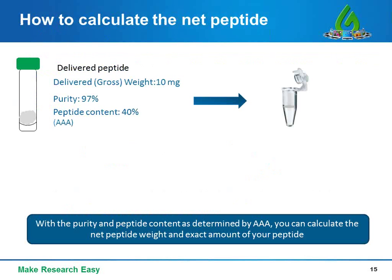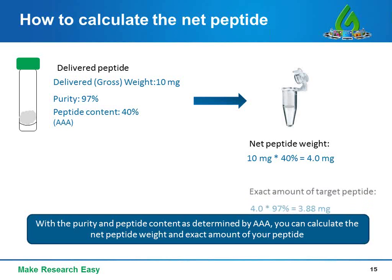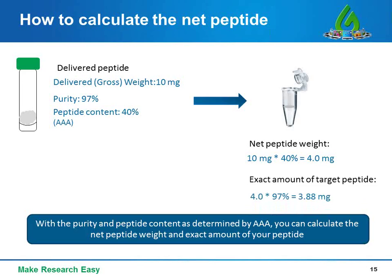Here is an example showing how to calculate the precise amount of your target peptides. A custom peptide with a delivered gross weight of 10 mg, 97% purity, and 40% peptide content as determined by AAA. First, you get the net peptide weight using the net peptide content percentage. Then, using the purity value, you get the exact amount of target peptides in the delivered product.